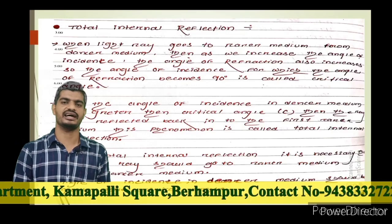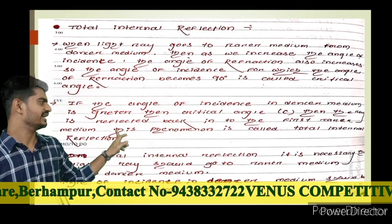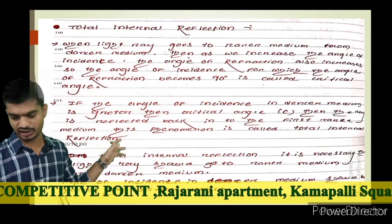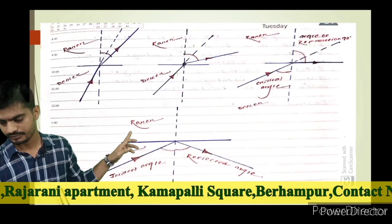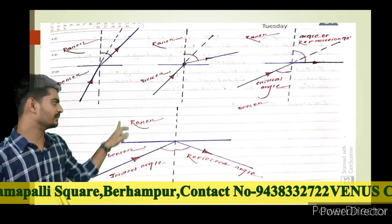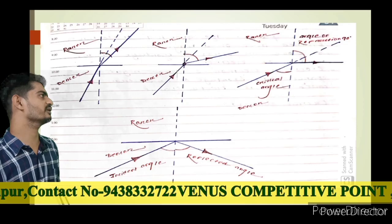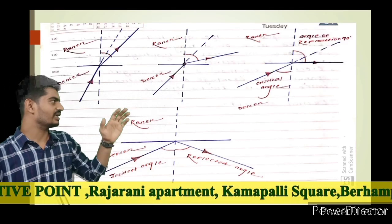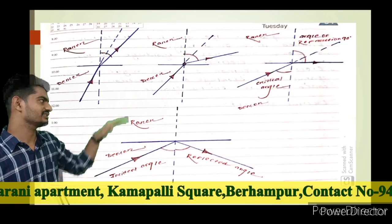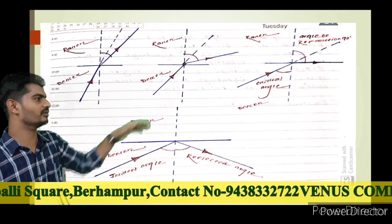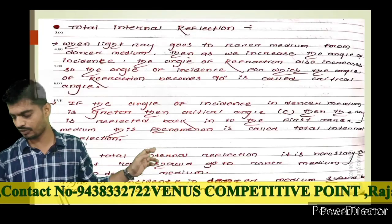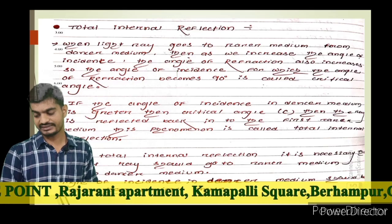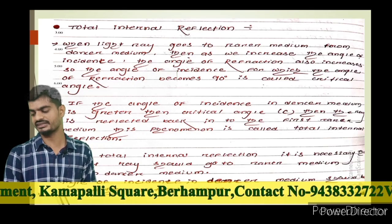We have to look at the bending nature of light and refraction. We look at the incident angle and refracted angle — whether the incident is in a rare or denser medium. If the angle of incidence in the denser medium is greater than the critical angle, then it reflects back. This phenomenon is called total internal reflection.